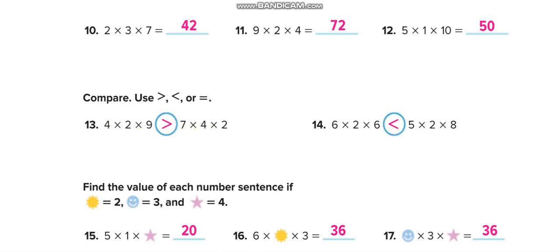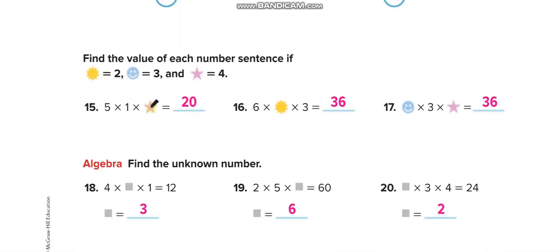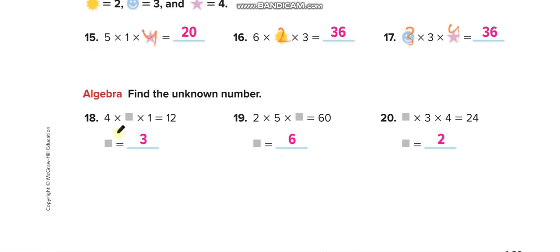For the symbol problem: the circle equals two, this sign means equals three, so write three; the star equals four, so write four. Then solve using the associative property. For the missing number questions: four times one equals four, and four times what equals twelve — so times three. Two times five is ten; ten times what equals sixty — so six. Three times four is twelve; twelve times two is twenty-four.